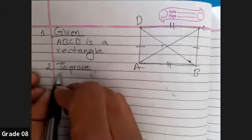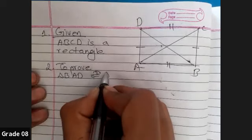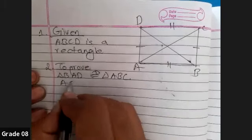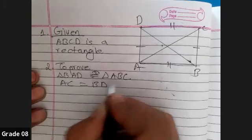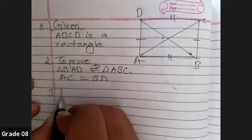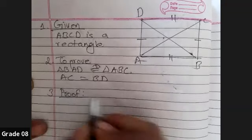According to the question, it is given that triangle BAD is congruent to triangle ABC. This is one main thing. And another is AC equals to BD. So if you prove this, then this will definitely come as your bonus. Now let me draw some proof table and then I'll continue to explain you.